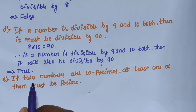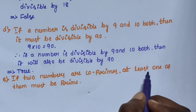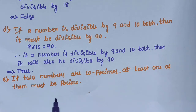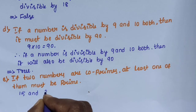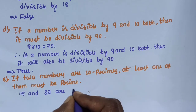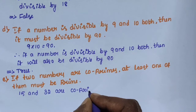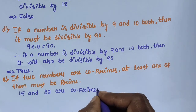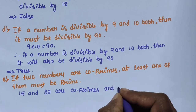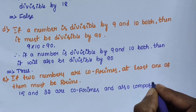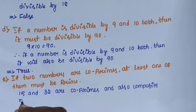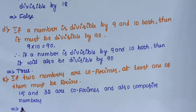Sub-question E: if two numbers are co-primes, at least one of them must be prime. This statement is false, because 15 and 32 are co-primes and both are also composite numbers.